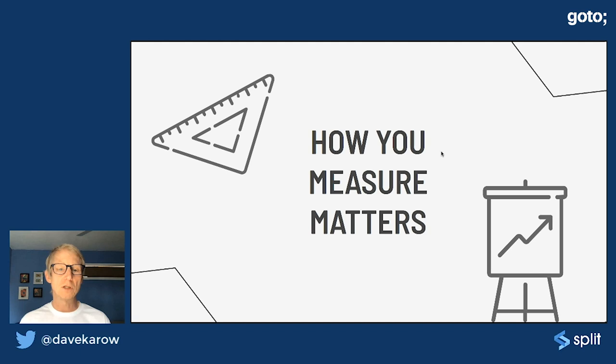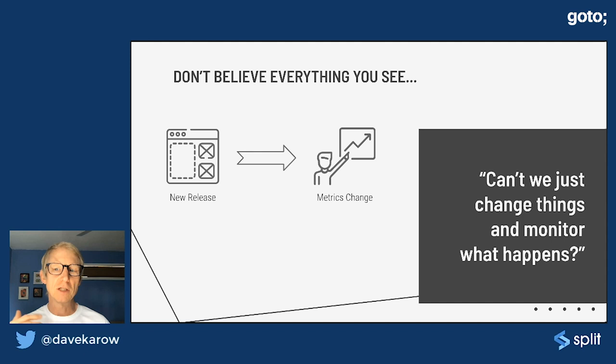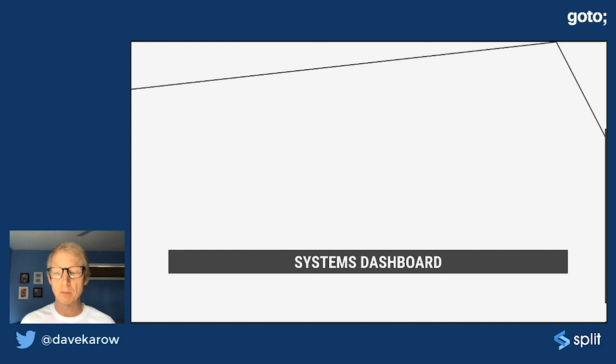So let's get into the meat of the talk, which is how you measure matters. I want to focus on this because it's a stumbling point for a lot of people that are used to using traditional charts and graphs. And then you get into a gradual rollout world and a lot of this breaks down. Your metrics don't really work the same way when you're going out to 5% of your population.